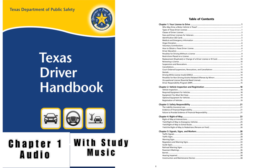Out-of-State License Holders: Applicants who are at least 15 but less than 18 years of age and present a valid out-of-state instruction permit will be issued a Phase 1 Learner License. Applicants who are at least 16 but less than 18 years of age and present a valid out-of-state driver license will be issued a Phase 2 Provisional License with passenger and time restrictions after successful completion of the driving exam. Applicants must meet all other requirements for a first-time original applicant. All licenses issued to persons less than 21 years of age will be marked 'under 21.'